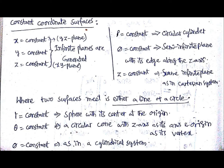Where two surfaces meet is either a line or a circle in general — the position at which two surfaces meet is either a line or a circle. In spherical coordinates, similar to cylindrical and Cartesian: if r is constant it is a sphere with its center at the origin; if θ equals a constant, it will be a circular cone with the z-axis as its own axis and the origin as its vertex.